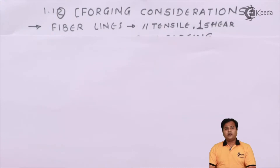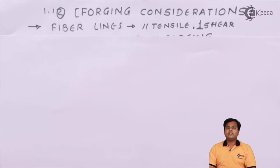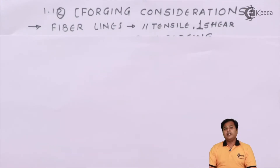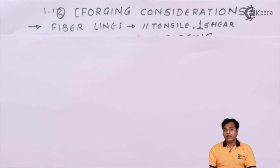The second important thing is these fiber lines should be perpendicular with the shear stresses. As we know, shear stresses always act at a certain angle with your normal stresses. We have to make sure that the fiber lines are oriented in such a manner that if the shear stresses are going to act on them, they act perpendicular. That was the first consideration for forging as far as machine design is concerned.